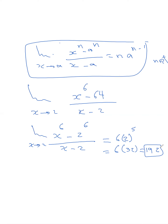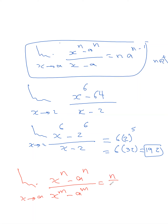There is another case from the theorem. The limit of x^n minus a^n over x^m minus a^m, as x tends to a, equals n over m times a^(n minus m).